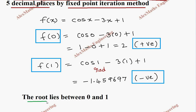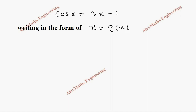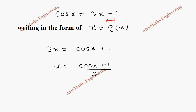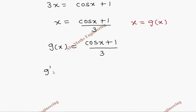Since f(0) is positive and f(1) is negative, we know the root lies between 0 and 1. Now we write the given function cos x = 3x - 1 as x = g(x), that is, writing x in terms of x itself. Taking the -1 to the other side: 3x = cos x + 1, so x = (cos x + 1) / 3. We have got g(x) = (cos x + 1) / 3.